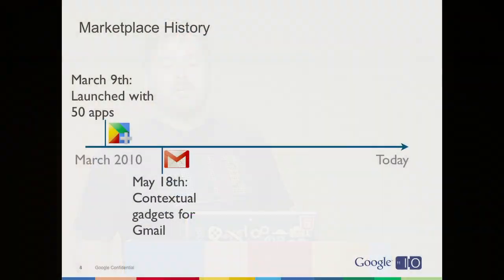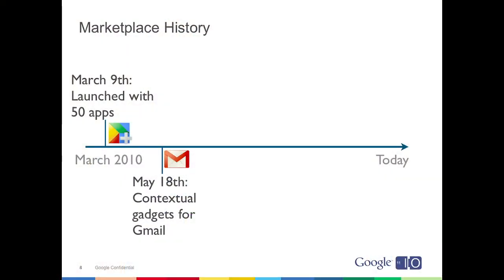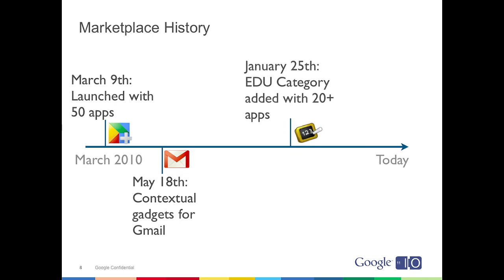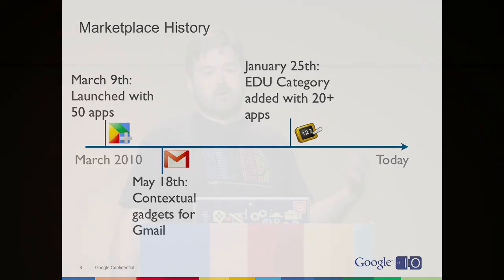We launched the Marketplace a little over a year ago, back on March 9, 2010, and started with 50 apps. Shortly after, at last year's Google I/O, we unveiled some new integration points — contextual gadgets for Gmail. More recently, this past January, we expanded the scope of the Marketplace by introducing a category for Google Apps for Education, and added over 20 applications for K-12 and universities. We celebrated our first birthday this past March and hit a milestone of 300 business applications now available in the Marketplace. Today, we're getting close to about 350, and we continue to add more each week.